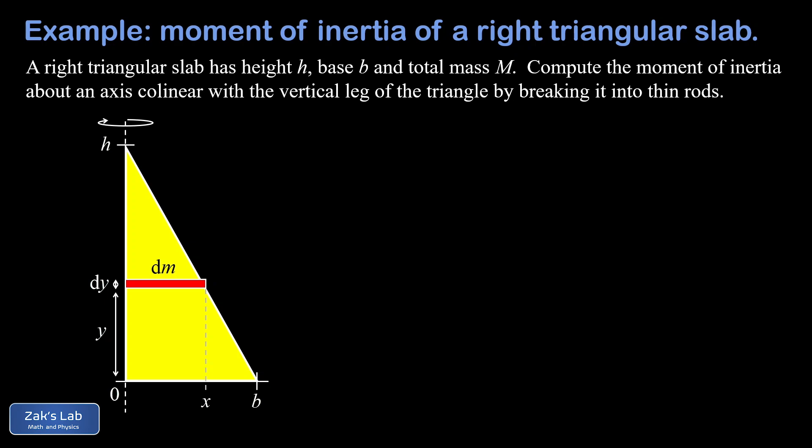Note that the length of these horizontal rods is going to change continuously as y changes. When y is really small we have longer rods - like all the way at the bottom of the triangle they'd have a length of b, and then as y gets bigger the length of the rods is continuously shrinking until we get to the very top where the rods have practically zero width.